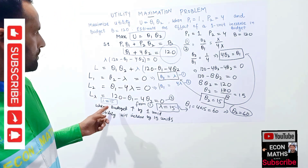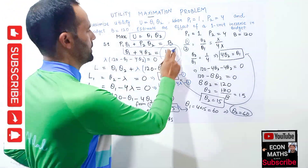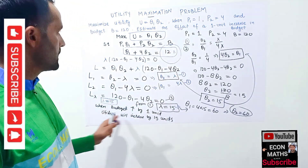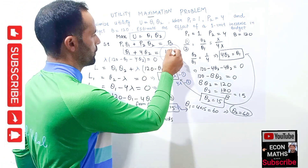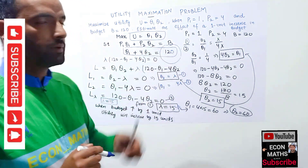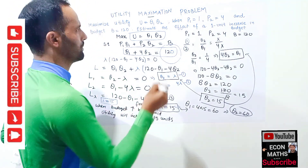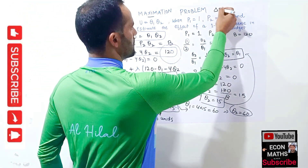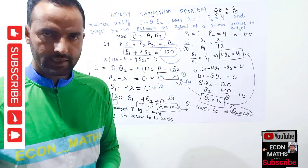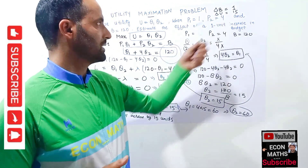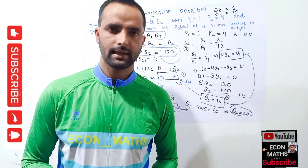So it simply tells us: when this budget constraint changes by one unit — say it becomes 121 — our utility will also change by 15 units. If the change in budget is 1, then the change in utility will be equal to 15. When the budget increases by one unit, our utility from the consumption of the two goods will increase by 15 units.